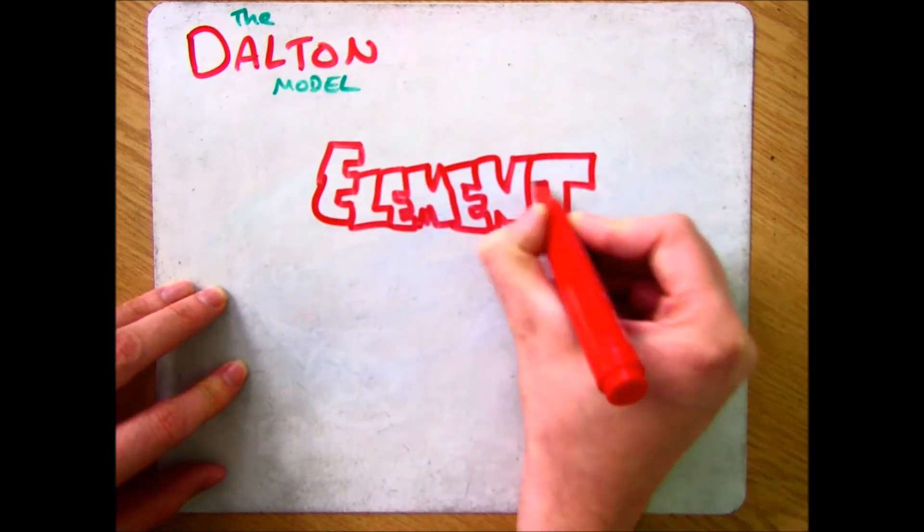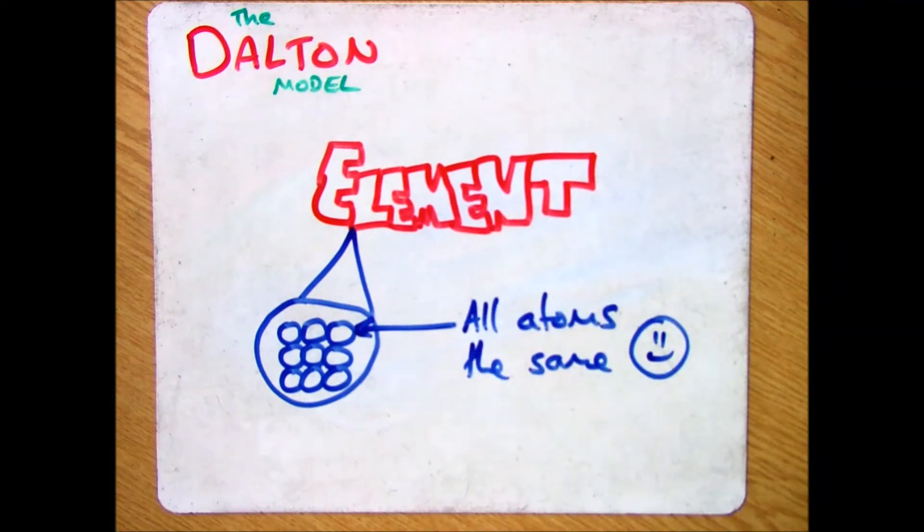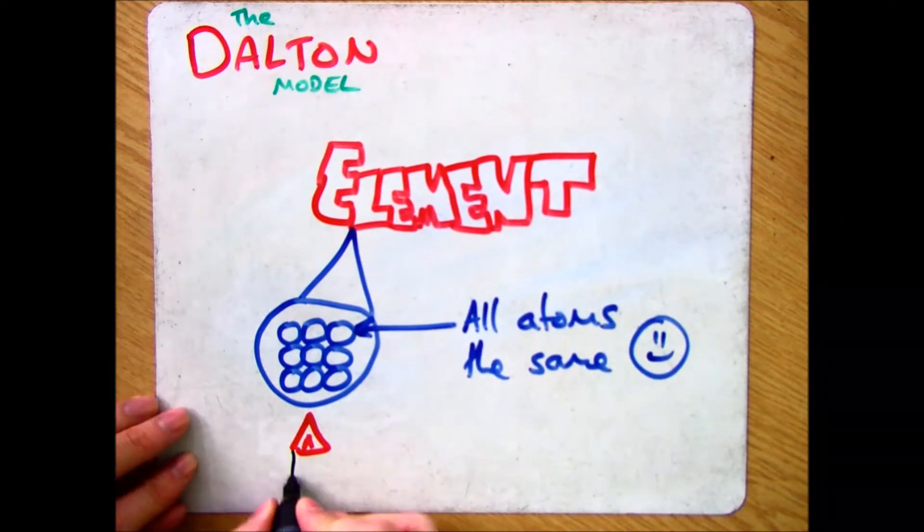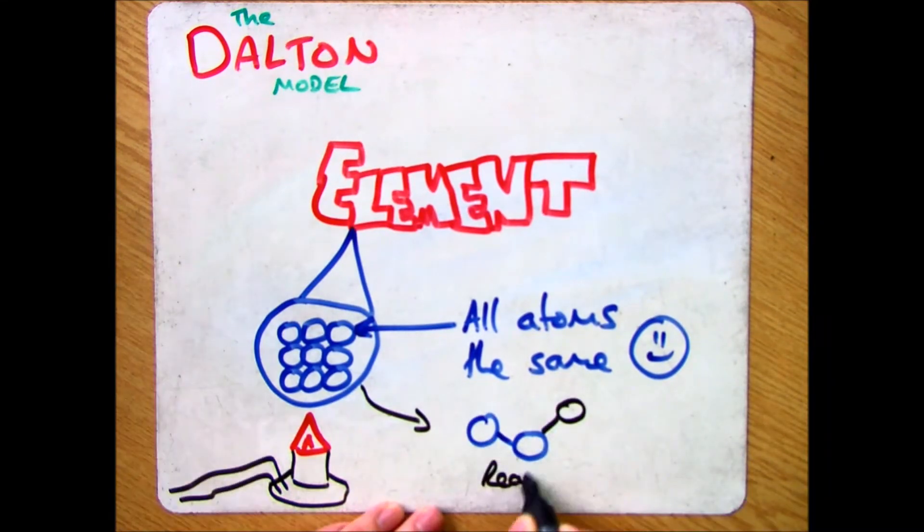He also discovered when looking at elements that all the atoms involved in an element were exactly the same. When he did reactions with those elements, he found out that the atoms rearranged themselves and they turned themselves into compounds.